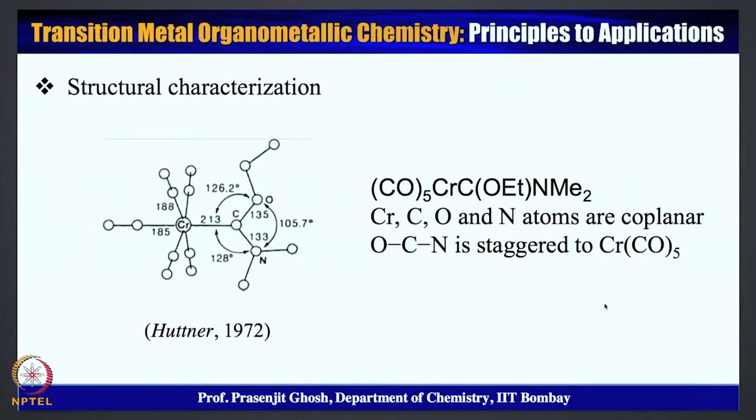These carbene complexes, being very important but unstable intermediates stabilized by forming metal-carbene bonds, have been characterized by various spectroscopic methods. The most powerful of these is X-ray single crystal crystallography, where both Schrock and Fischer type carbenes have been structurally characterized. In the next few minutes, we will look at some classical examples of Fischer and Schrock carbene complexes that have been structurally characterized.